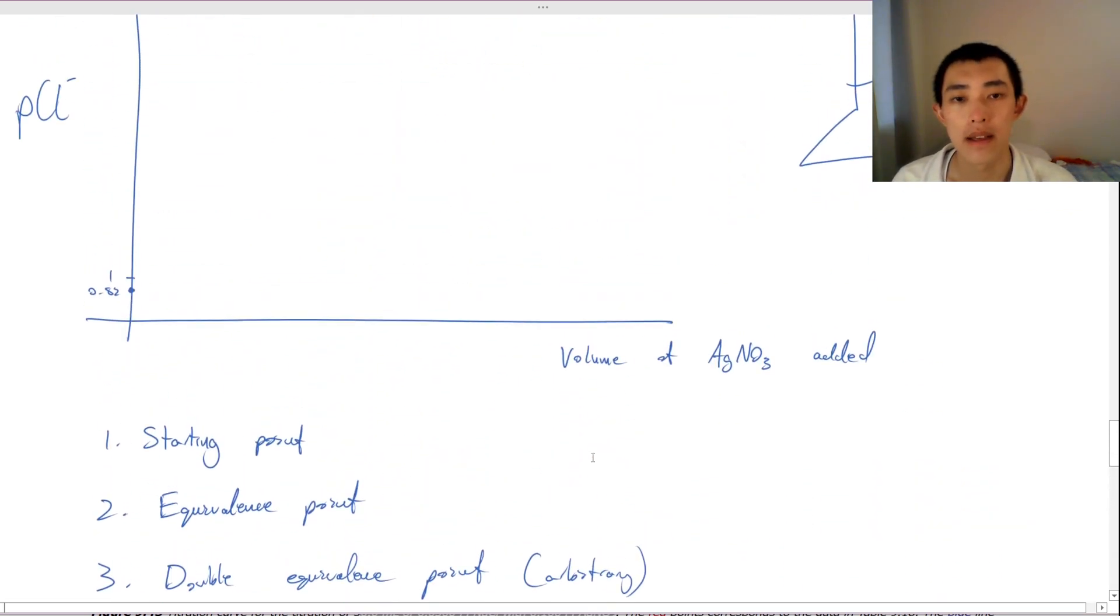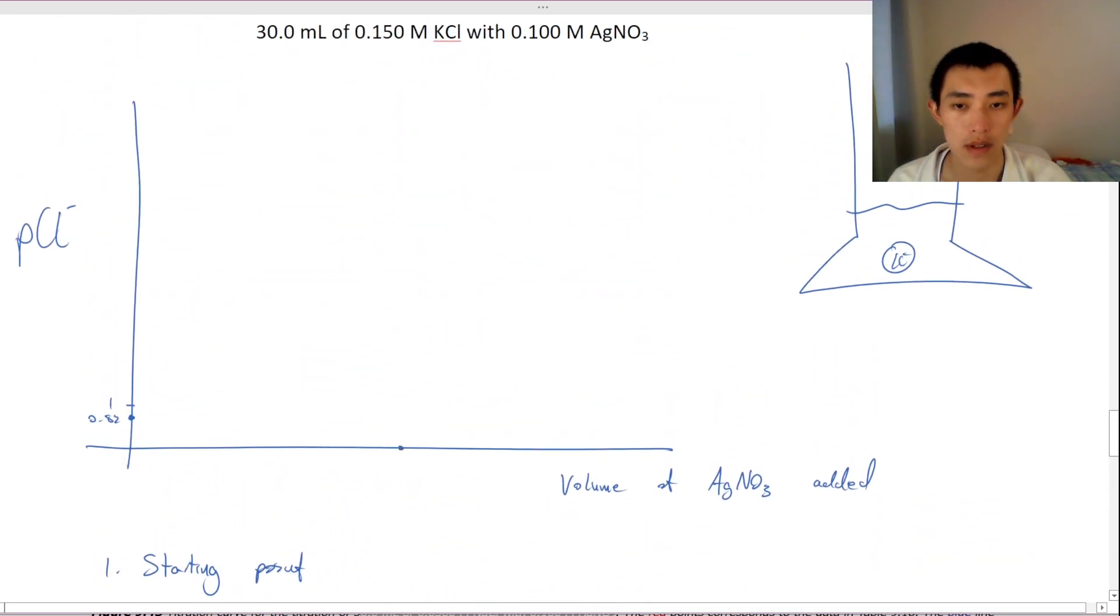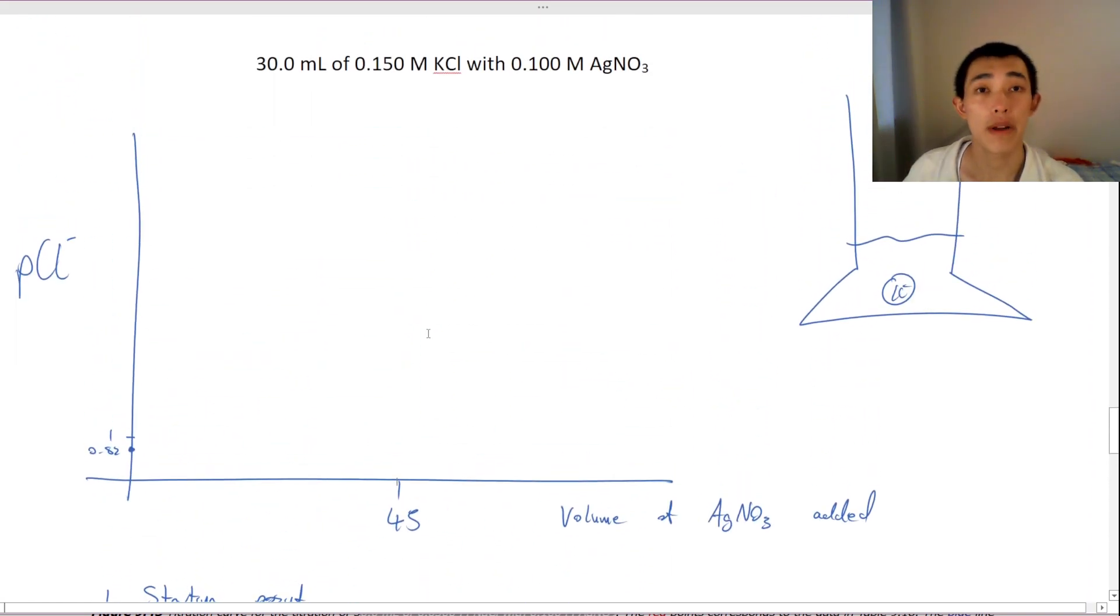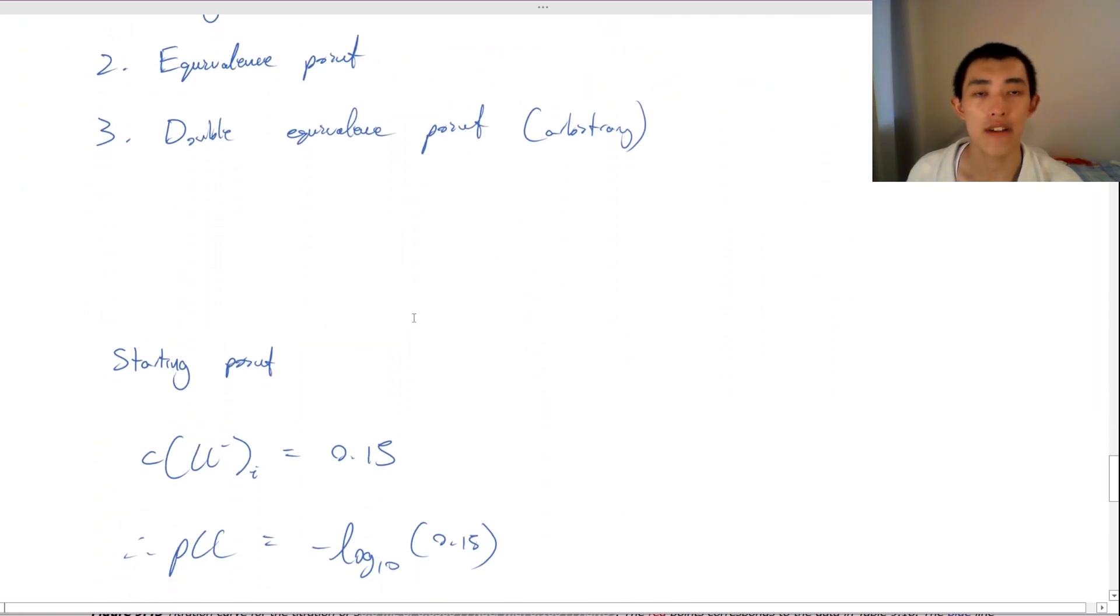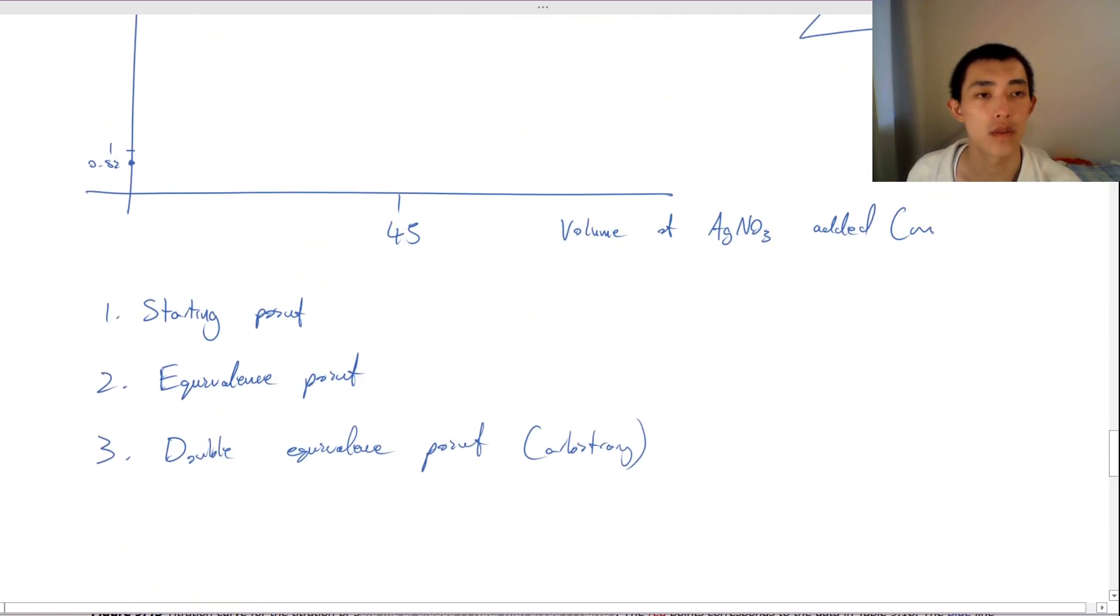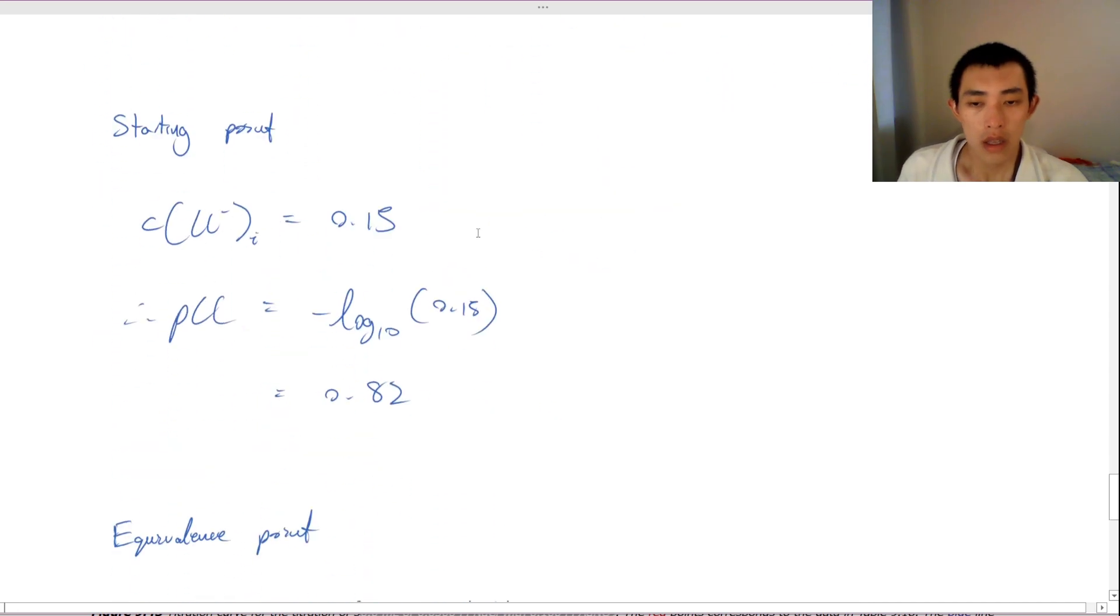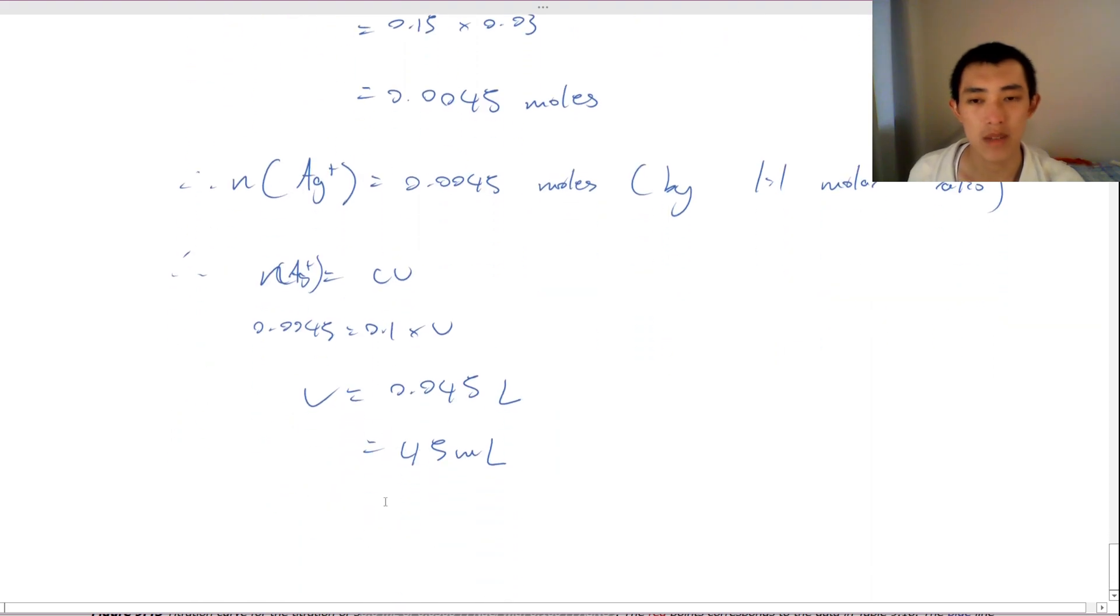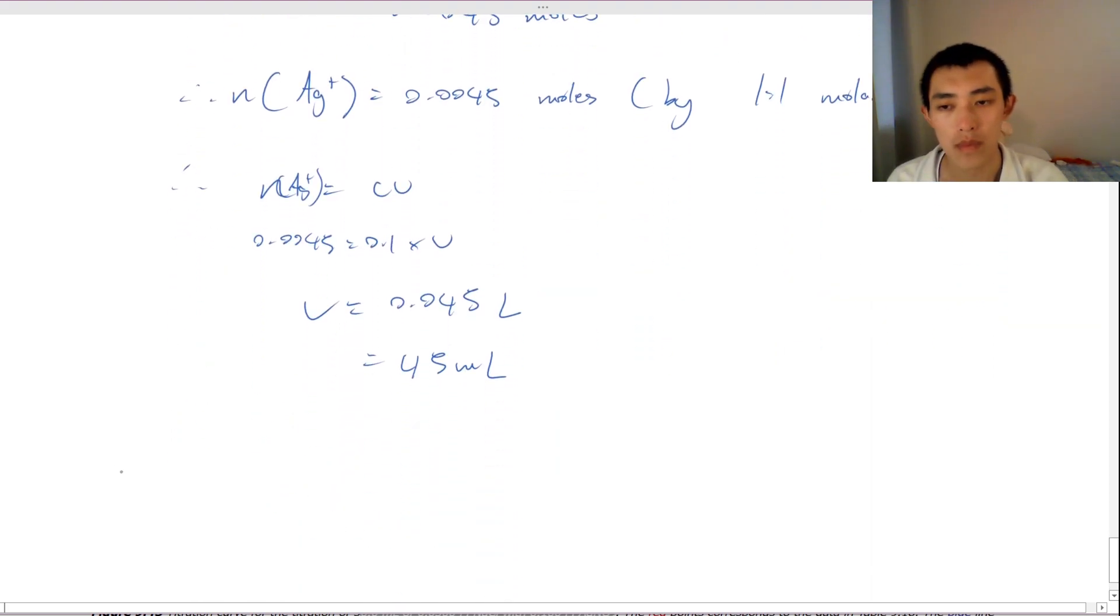So we'll put that here. So 45 milliliters. We want to figure out what the concentration of my chlorine is at 45 milliliters. And the way that we can do this is just using a bit of good old KSP. So we've actually done this calculation at the very start of this video.